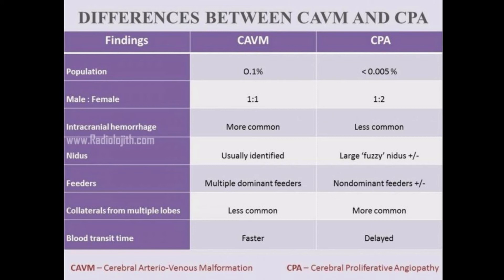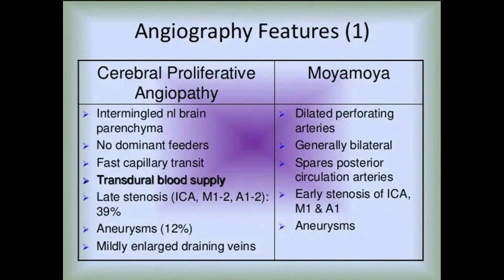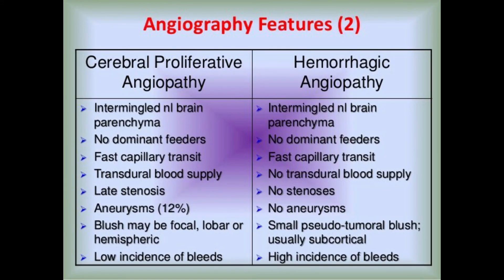See the image for the differences between classical cerebral AVM and cerebral proliferative angiopathy. Cerebral proliferative angiopathy is very rare, slightly more common in females. There is less incidence of intracranial hemorrhage at presentation. It might not have a typical nidus but can have non-dominant feeders and more collaterals from many parts of the cerebral hemisphere with delayed transit time.